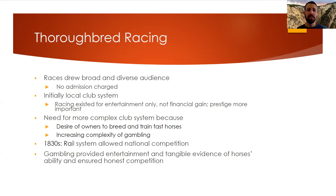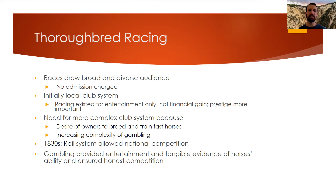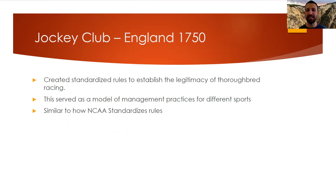Thoroughbred racing represents the very beginning of sport management. In the beginning, no admission was charged — races were just for entertainment with no financial gain involved. But eventually a more complex system was needed because owners were breeding and training fast horses. There was increased complexity around gambling and more gamblers, so more rules were required. The rail system and better transportation allowed for national competition. Gambling was important because it allowed people to make money and showed that great horses could be bred, giving owners more pride.